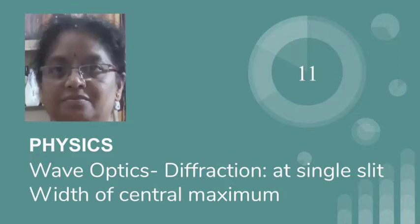Hello, today I am here to talk about another phenomenon of light: diffraction. When there is an obstacle in the path of a light ray, a sharp shadow of the obstacle is formed in general.